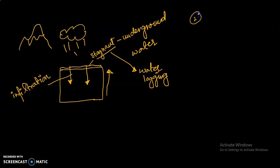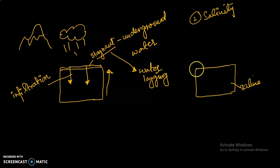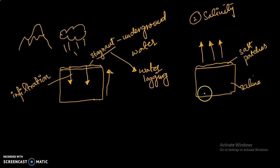The second problem is salinity, which is related to salt content in underground water. If the underground water is salty, that salt content comes onto the land surface along with the water. When the water evaporates, salt patches are left behind, which affects the fertility of the land. That is called salinity.